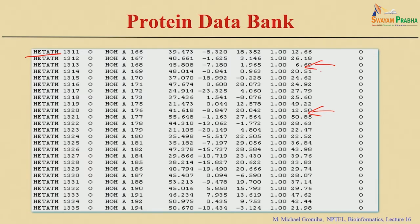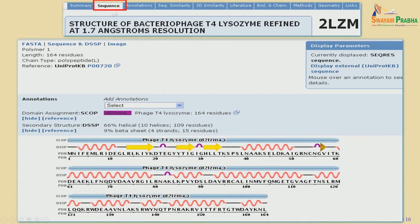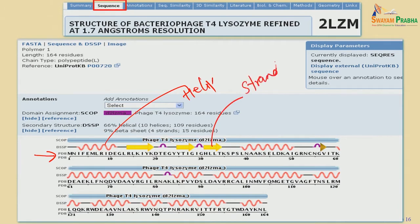Now we have the 3D coordinates. I will explain the various options available in the Protein Data Bank. First, we have the sequence — you can see the amino acid sequence and also the secondary structure assignment. The spiral ones represent helix and the arrows represent strands, based on DSSP — the Dictionary of Secondary Structures of Proteins. DSSP takes the PDB structures and based on the hydrogen bonding pattern assigns the secondary structures — helix, strand, and so on.